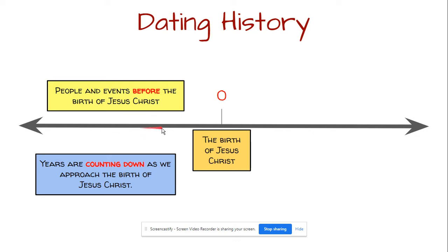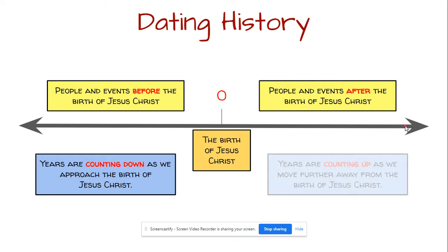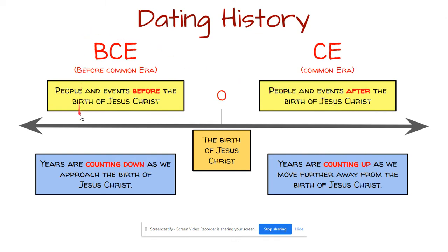We'll get smaller and smaller until we're right here, and this would be what we would call the year 1 BCE. On the right hand side would be people and events after the birth of Jesus Christ. So on this side, we would see the year 1 CE, then 2, 3, 4, etc., all the way up until this current year, which is the year 2021 CE. On this side, you have years that are counting up as we move further away from the birth of Jesus Christ. This side of our timeline would be the BCE side or before the common era, and this side would be the common era or CE.